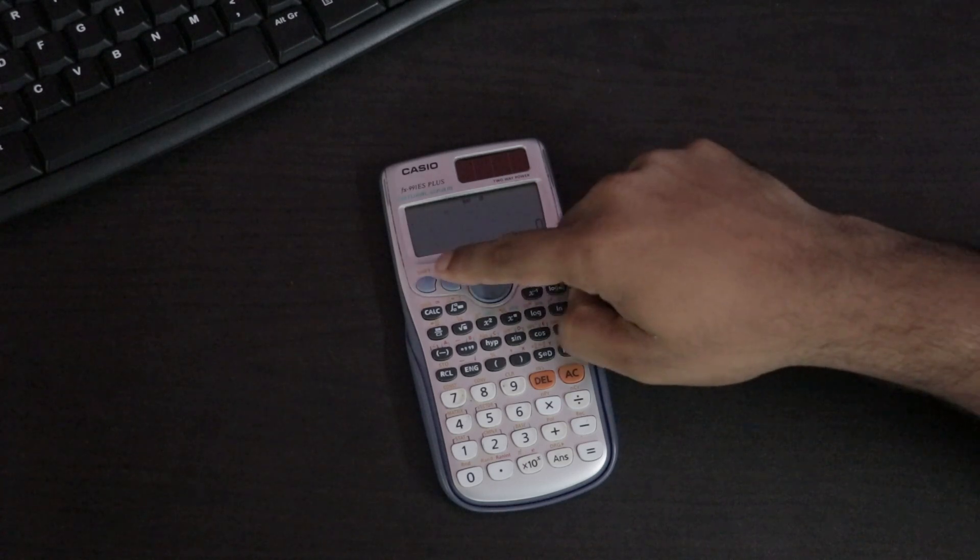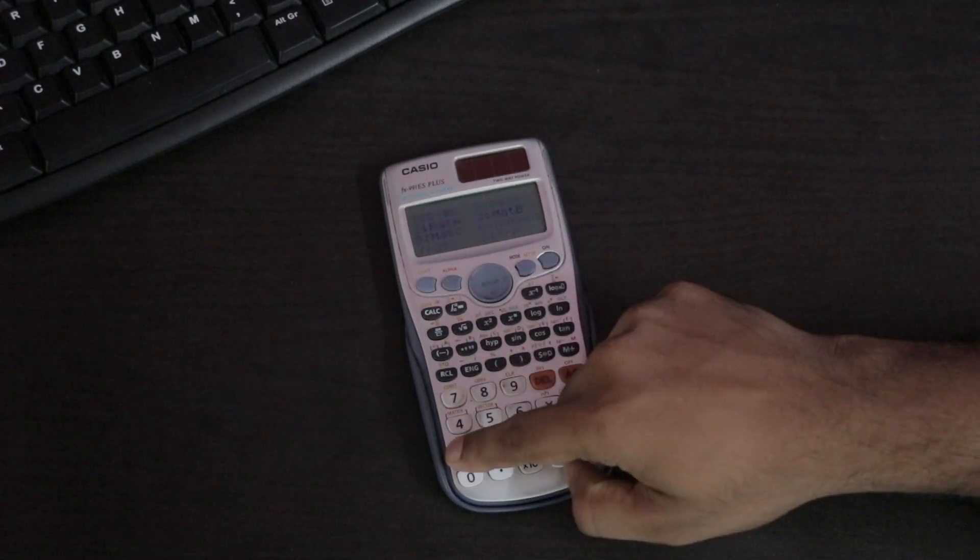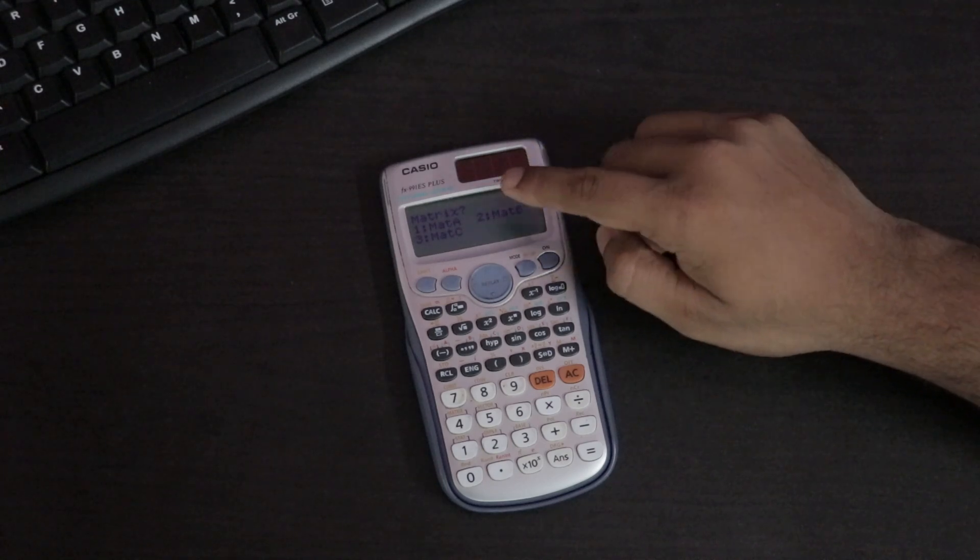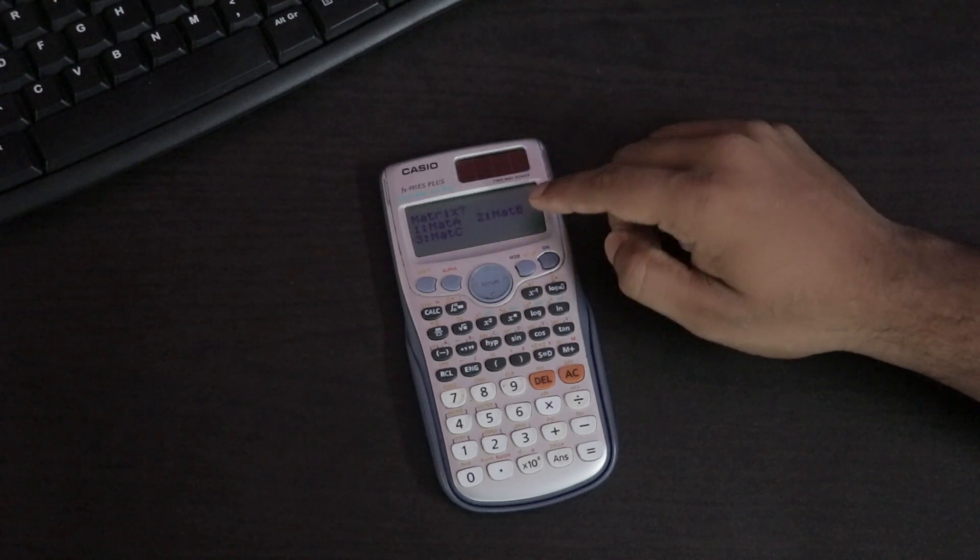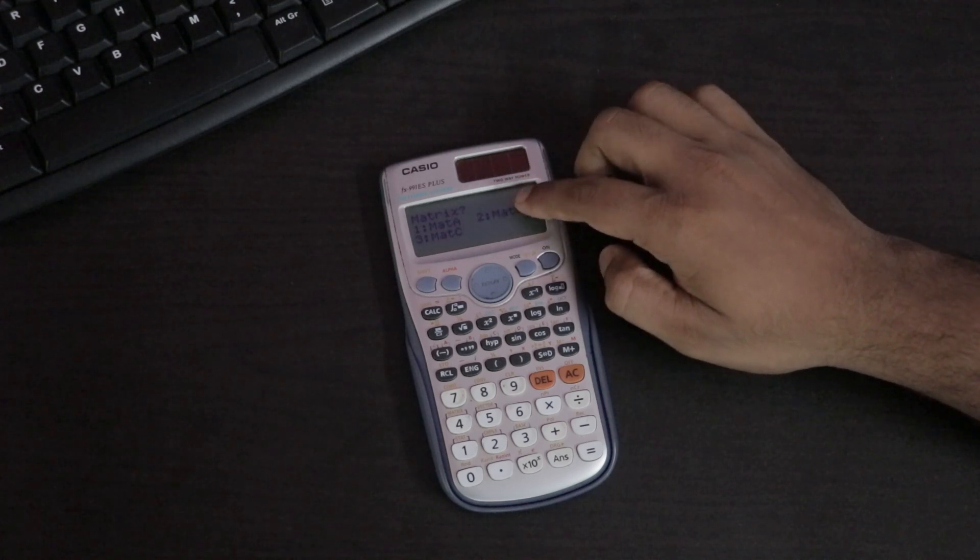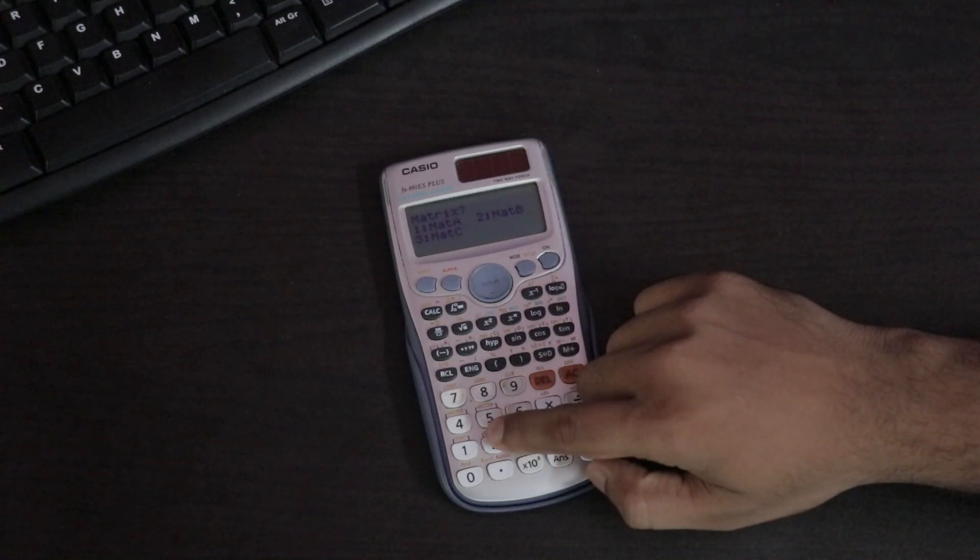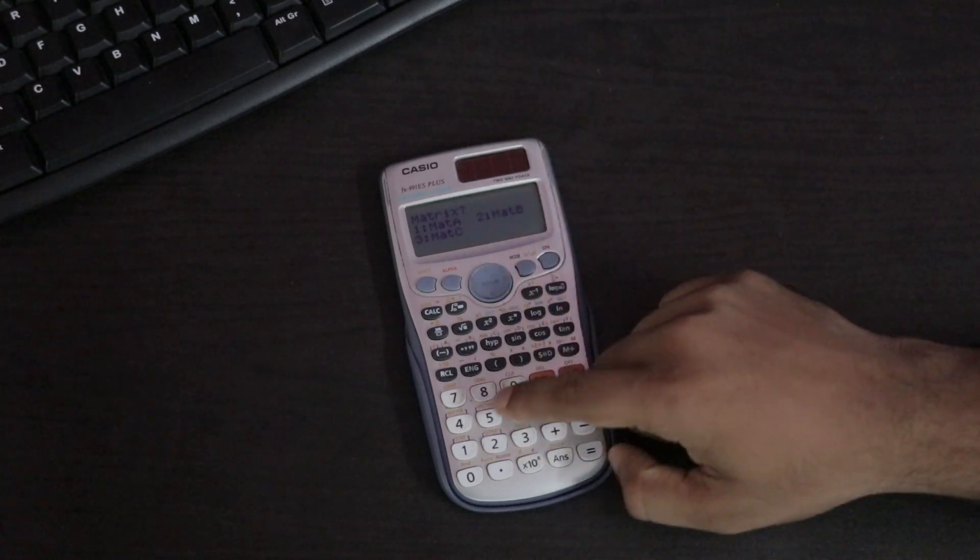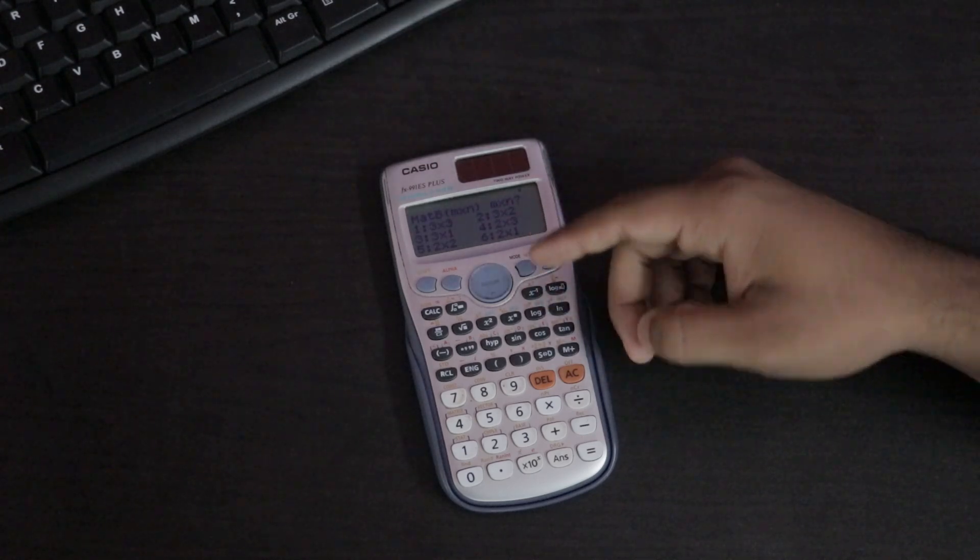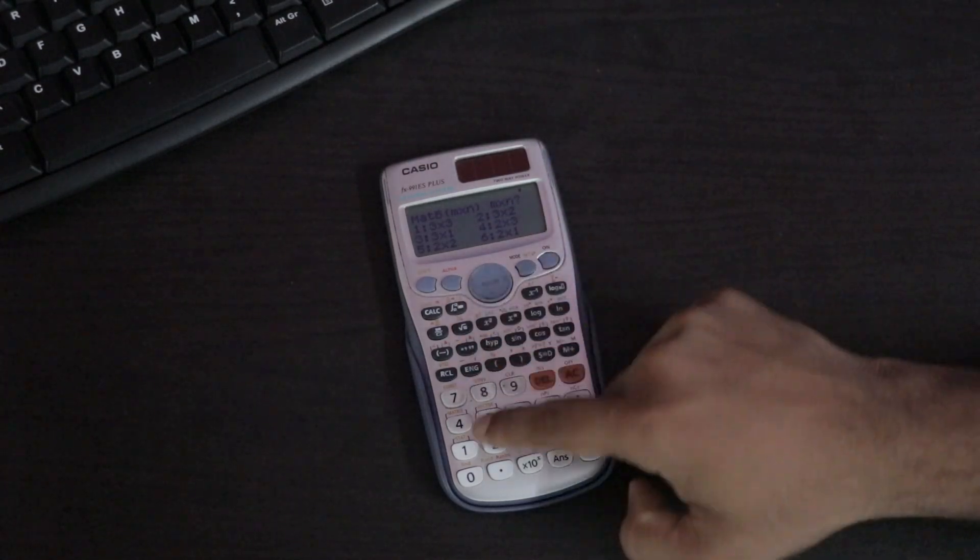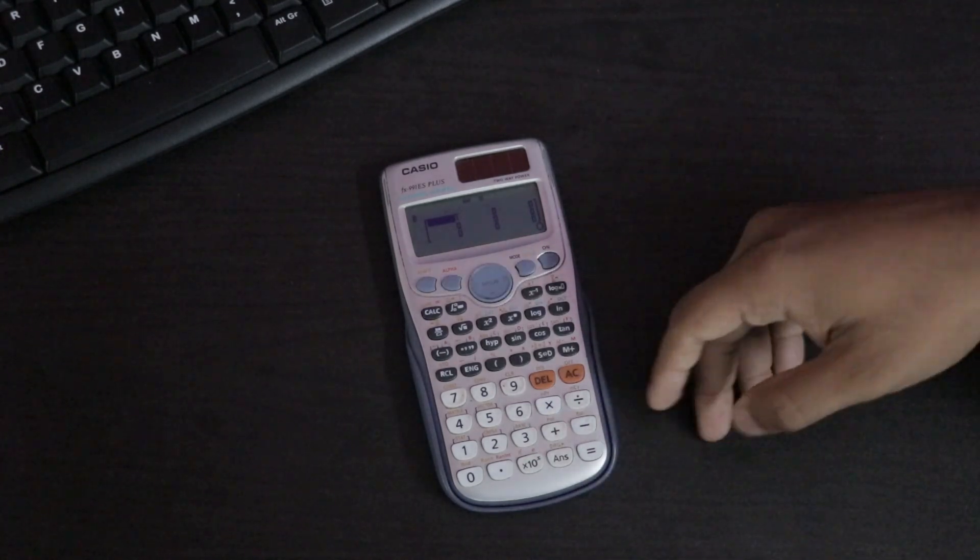For that click on AC. Then repeat the same step: shift, fourth option, dimension. Earlier we stored the matrix in matrix A, so here we have to choose different. We can use matrix B as well as matrix C, whatever option you want. I am clicking on matrix B which means 2. My matrix is also in 3 by 3 form, so I click on 1. Then adding the values here.